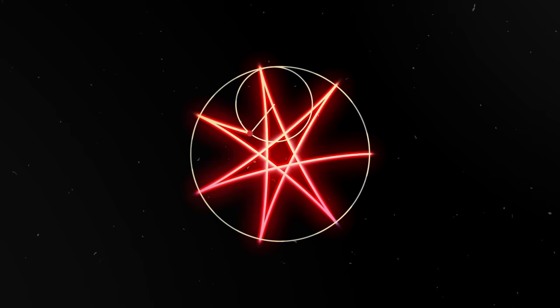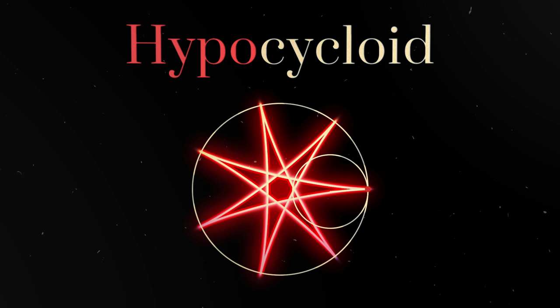However, the spirograph wheel rolls on the inside surface of the other wheel. In this case, the trajectory of the point is called hypocycloid. Hypocycloids look like stars. This is what the spirograph would draw if its hole were located at the very edge of the wheel.